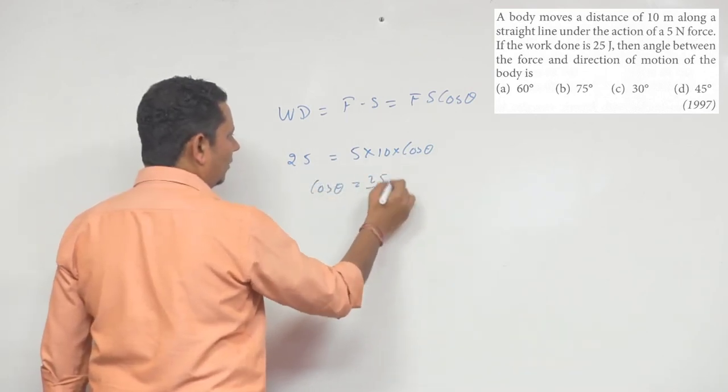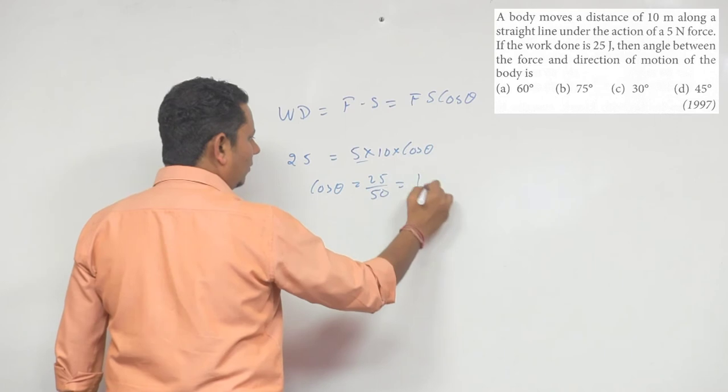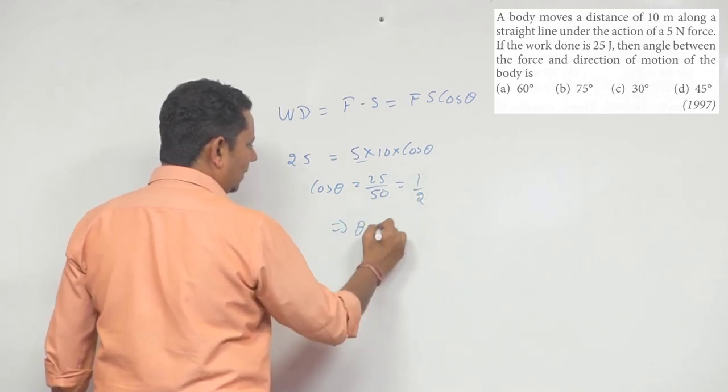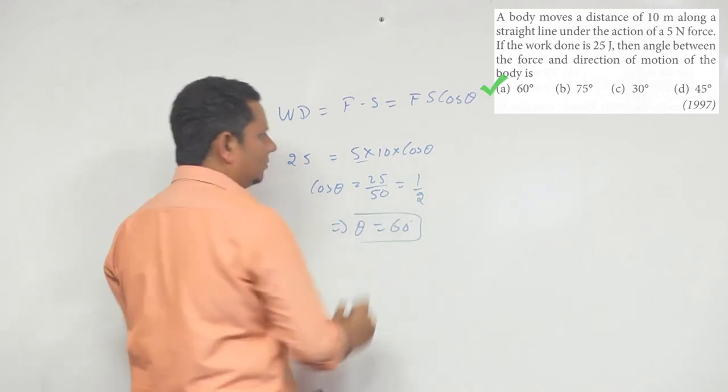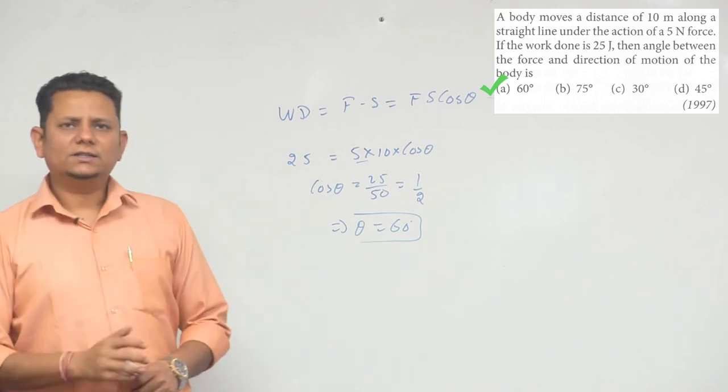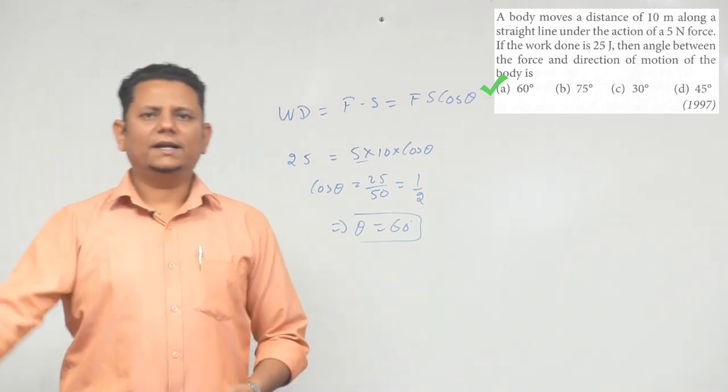cos θ will equal 25 divided by 50, which equals 1/2, implying θ = 60 degrees. So based on this, we can say that 60 degrees, option A, would be the right answer.